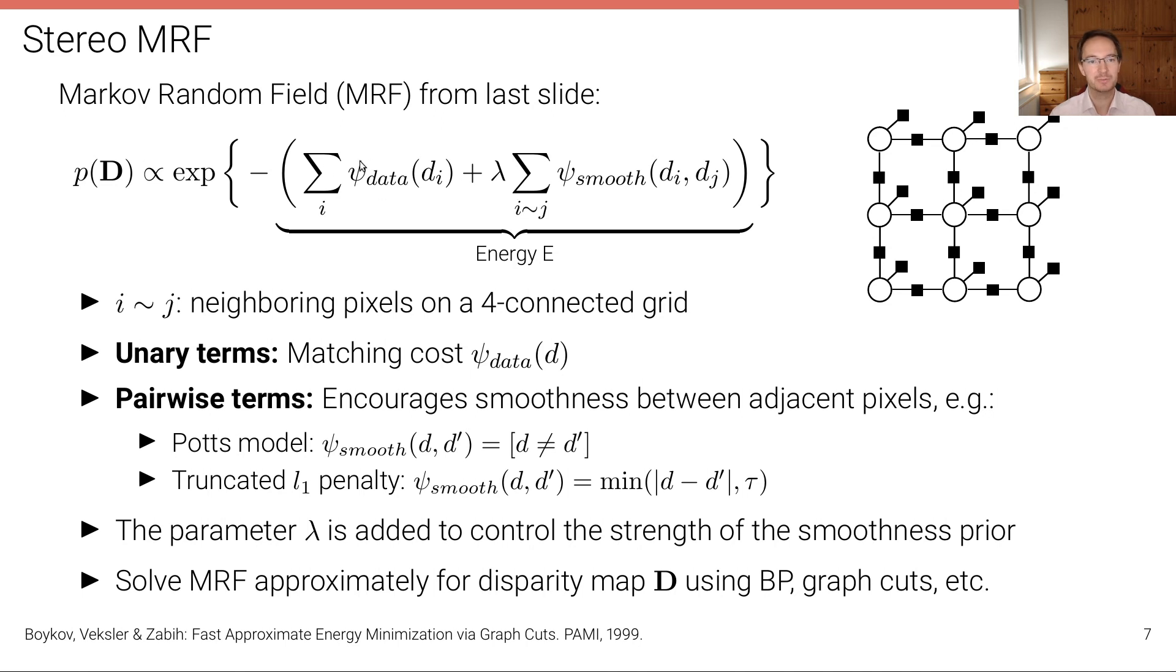And it controls the strength of the smoothness prior. If we set lambda to zero, then we are only optimizing this term here. And we fall back to the standard block matching algorithm, the winner-takes-all solution. And if we increase this lambda, then we obtain smoother and smoother solutions. But, of course, if we increase it too much, then we will obtain solutions that are too smooth. Then we are weighing this prior knowledge about the smoothness too high.